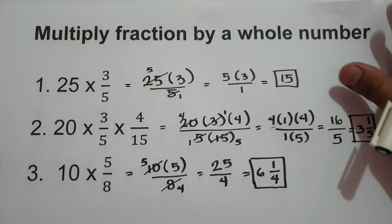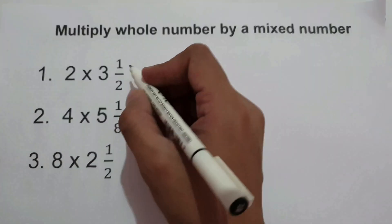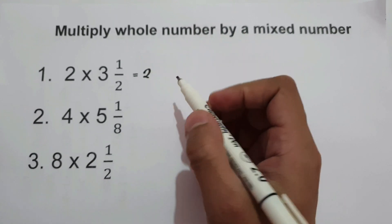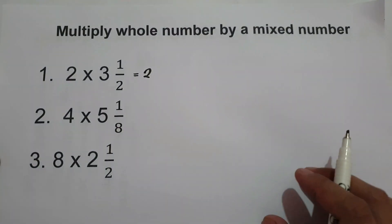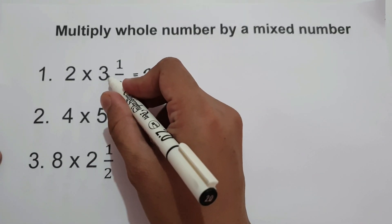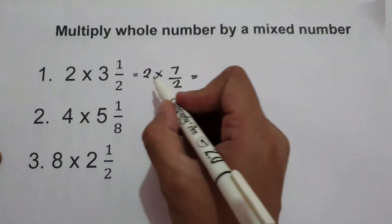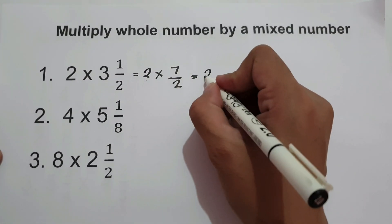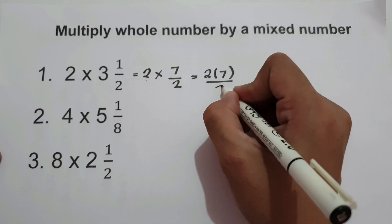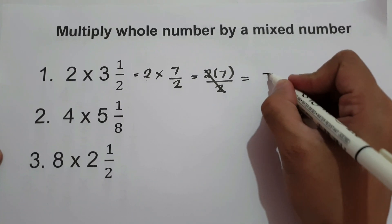Now let's multiply a whole number by a mixed number. The rule: first, write the whole number as is, then convert the mixed number into an improper fraction. For example, 2 times 3 and 1 half: convert to 2 times 2 is 4 plus 1 is... actually, 2 times 2 is 4 plus 1 gives 7 over 2. Then multiply: 2 times 7 over 2. Cancel the 2s and the answer is 7.